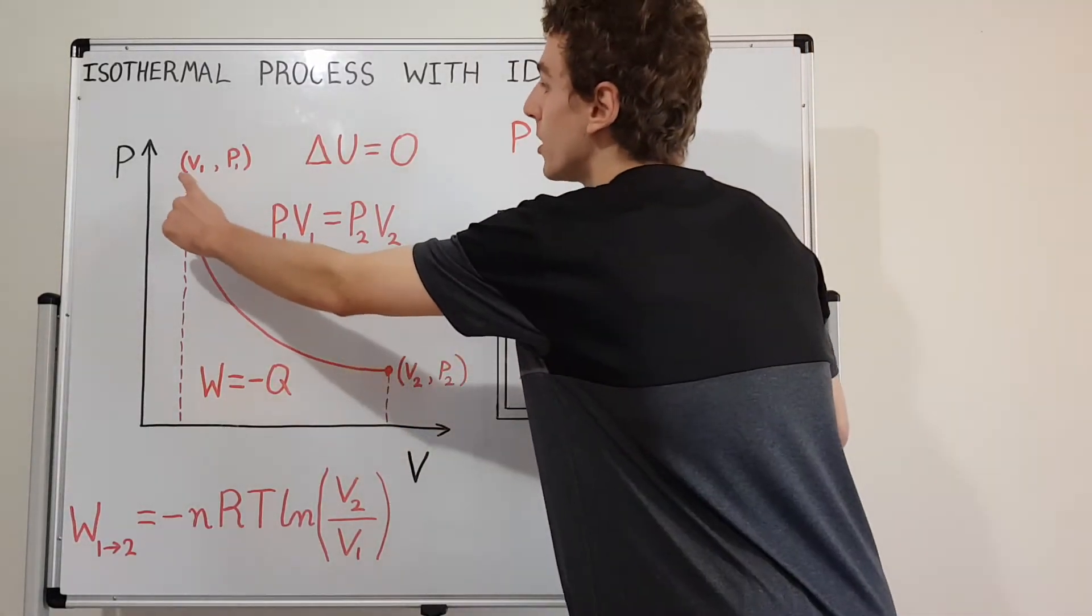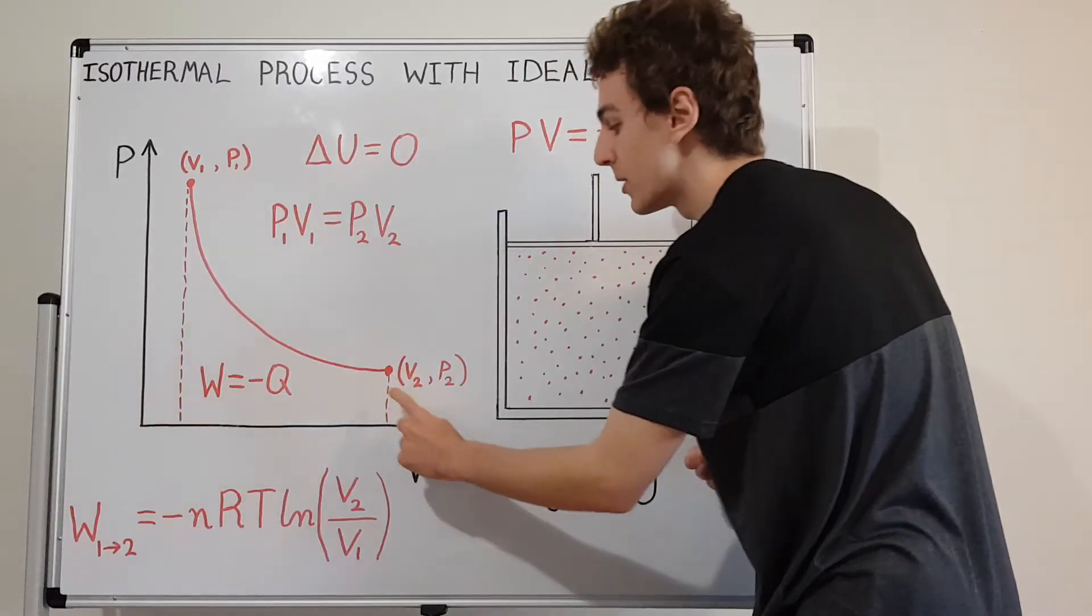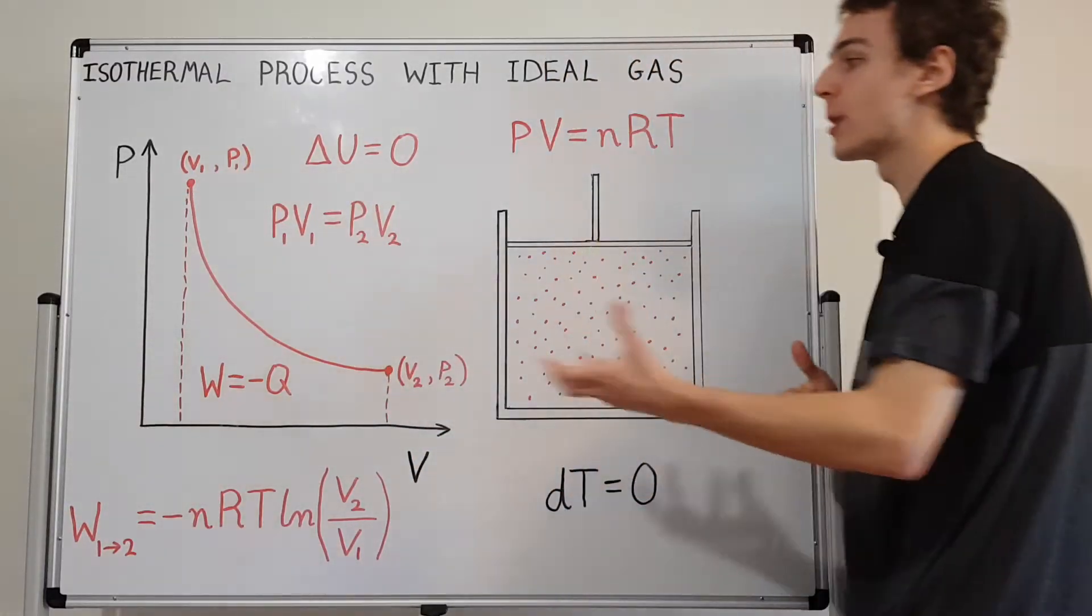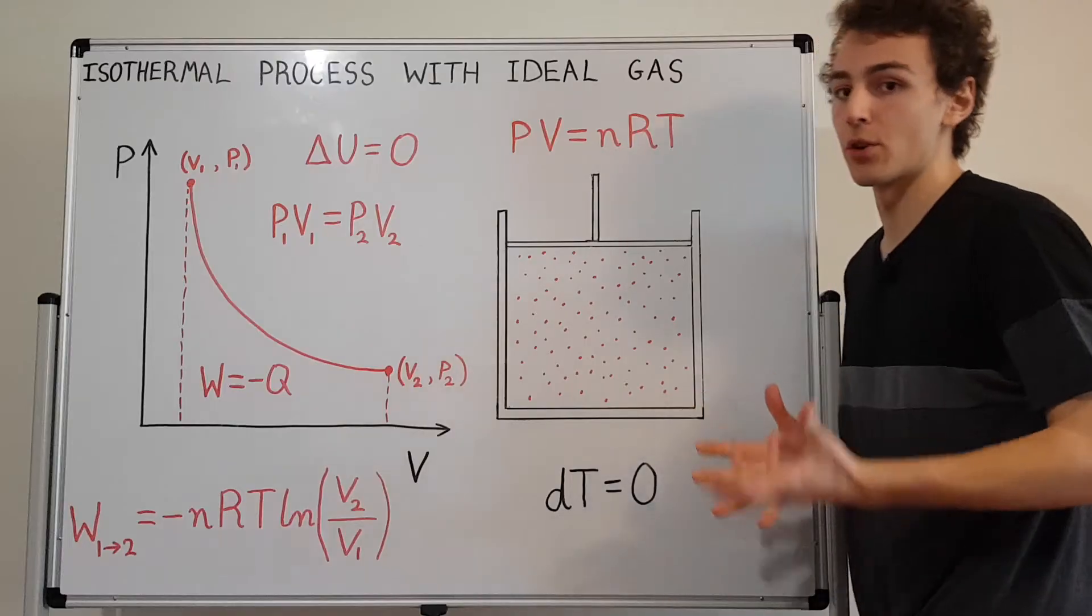So if we have a look at this point over here, this is V1P1, and this point is V2P2. These guys can be treated as the initial and final points of an isothermal process.